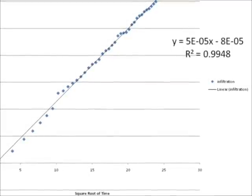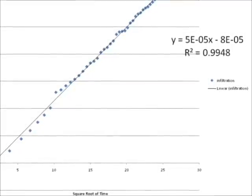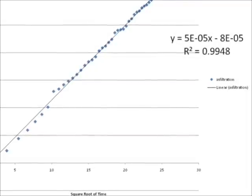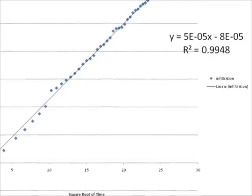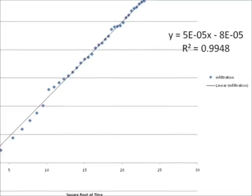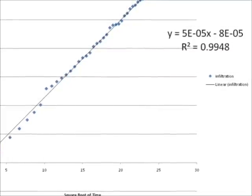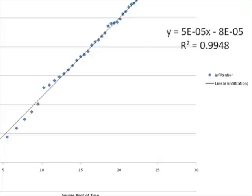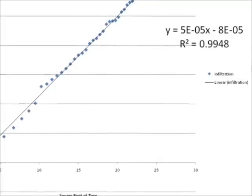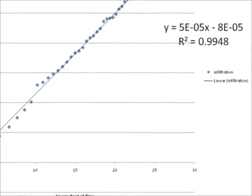Finally, the slope is found by applying the linear equation y equals mx plus b to the trend of the data where m equals the slope and also equals C1. In this case, C1 equals 5 times 10 to the negative 5th.